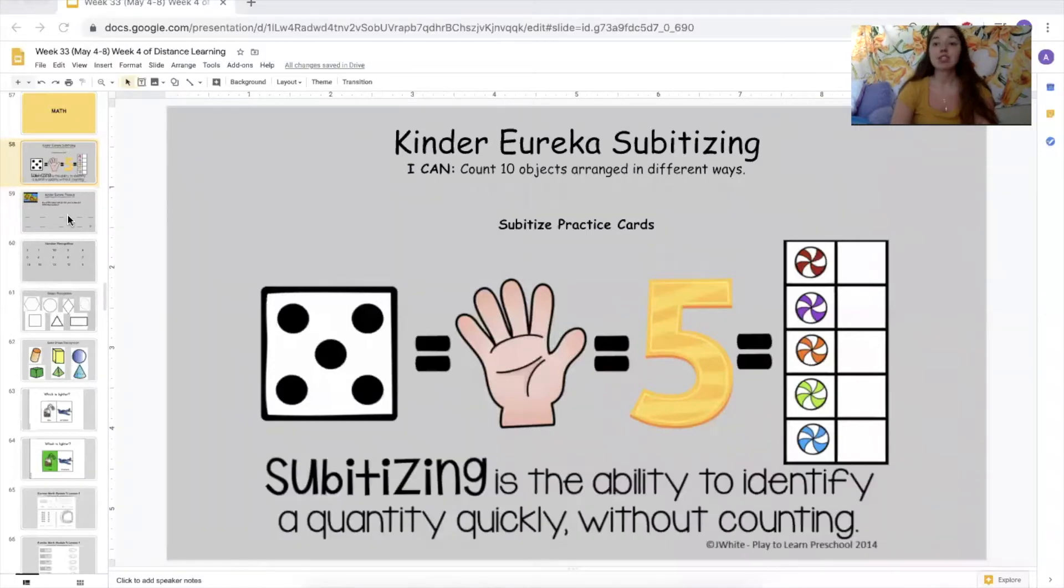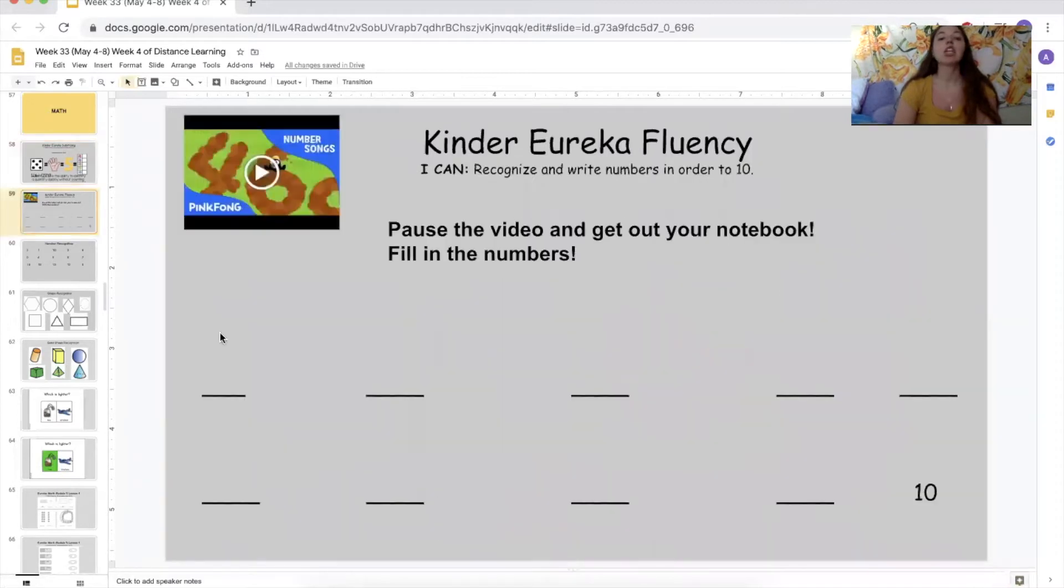All right friends, we just did subitizing. Check. Let's go ahead to number fluency. I would like you to go on YouTube and watch our Pink Fong song that can help you know what order the numbers in and how to write the numbers. If you are getting really good at writing the numbers zero through 10, you can totally go on and show me how good you are at writing numbers beyond 10 after 10, like 11 and 12 all the way up to 20.